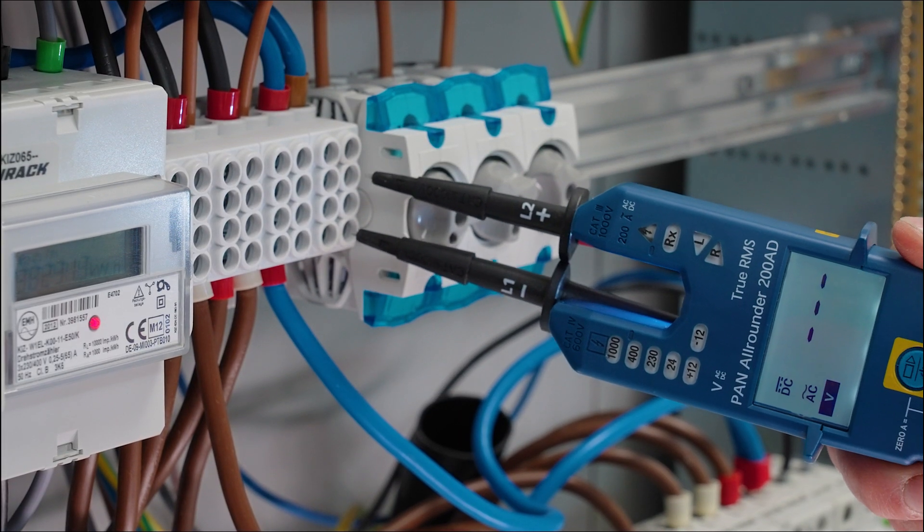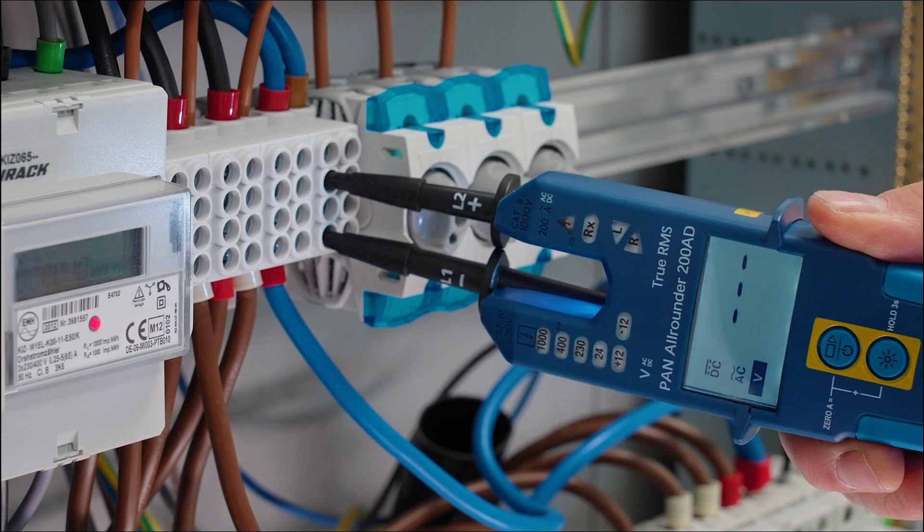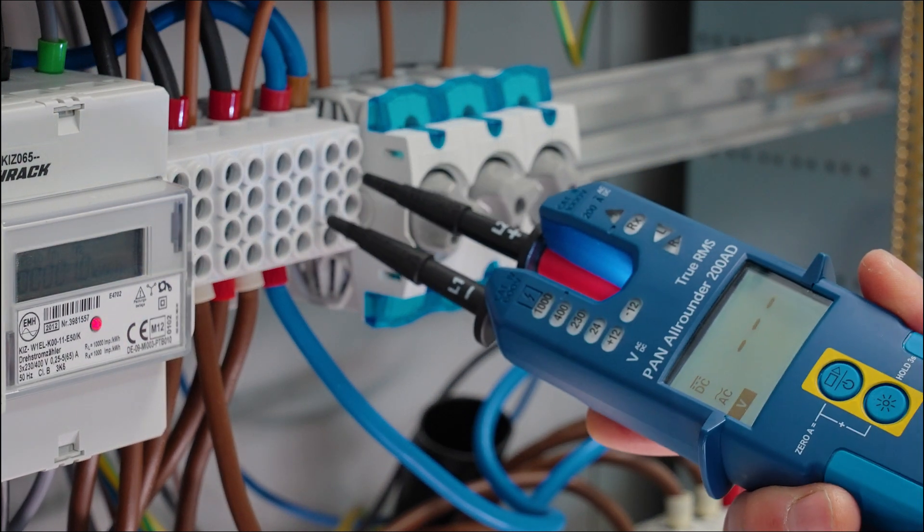When using both test tips, Pan Allrounder is a continuity tester and a voltage tester.